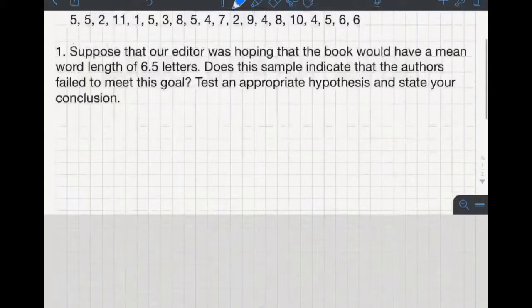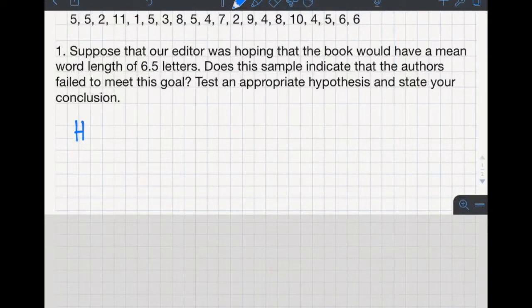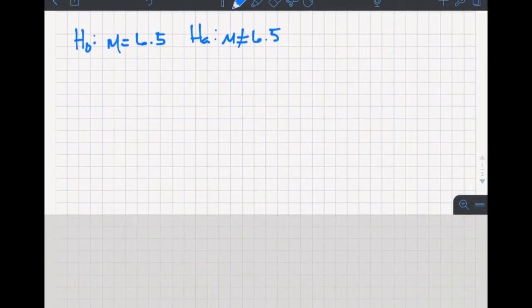First thing we do is write our hypotheses. We start by saying our null hypothesis H₀ is that the mean equals 6.5 words. That's what they told us to start with, so we assume that it is that—it's no different, the status quo, the absence of the desired effect. Our alternative hypothesis Hₐ is that the mean is just not 6.5. We don't really know if it's more or less because they didn't give us an indication. If it's different than 6.5, that's a problem, so we don't care whether it's more or less.